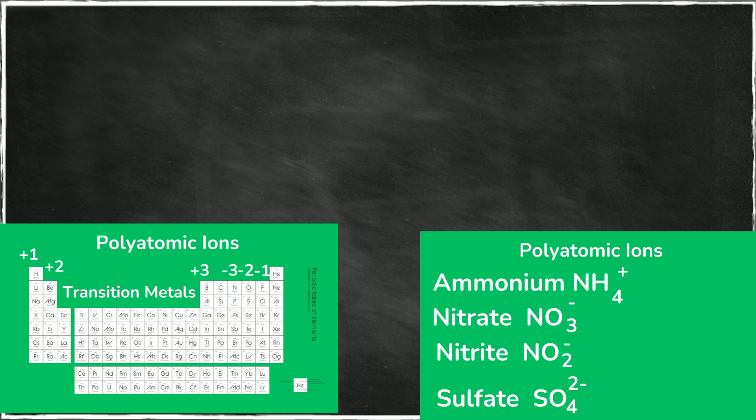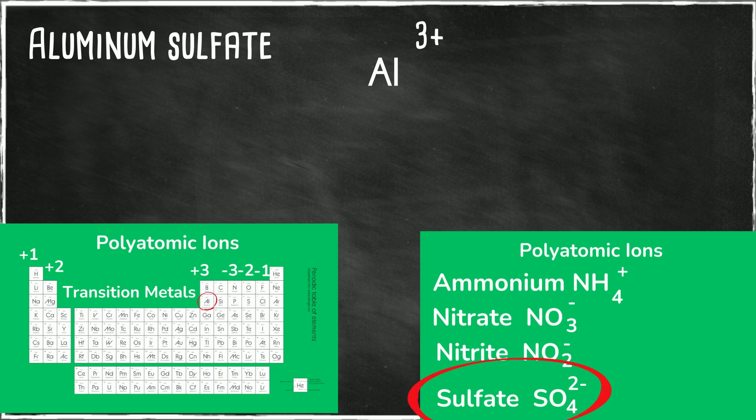Let's take a look at aluminum sulfate. Aluminum is in group 3a so it has a plus 3 charge. If you look on the list of polyatomic ions sulfate has a 2 negative charge. They are not at zero charge so we will cross.